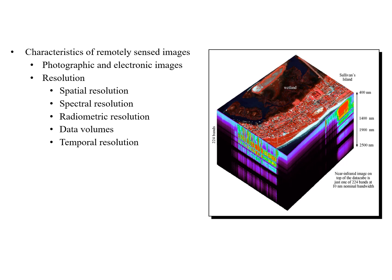Having reviewed some of the basic physics involved with remote sensing, we're now going to move on to discussing images and how we think about them in remote sensing. We're going to talk about a little bit of an introduction and discuss photographic and electronic images.